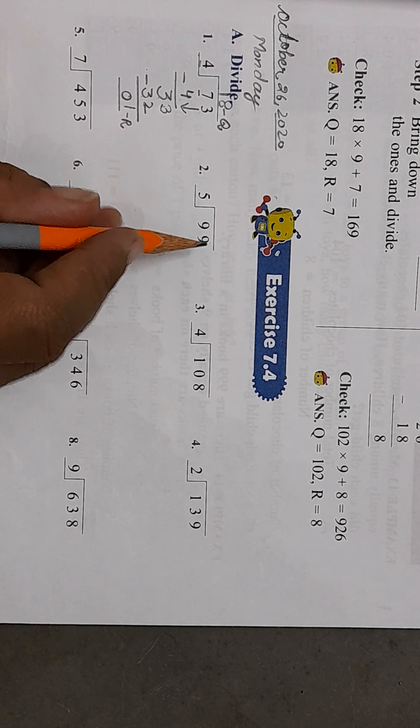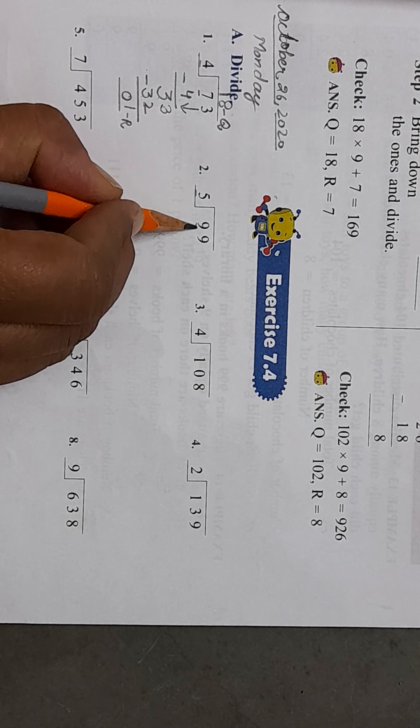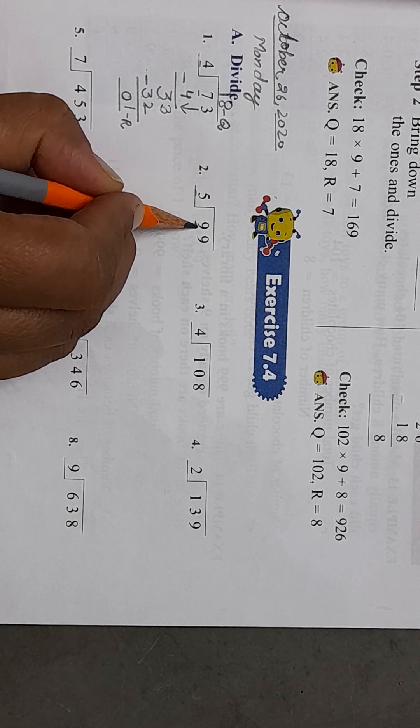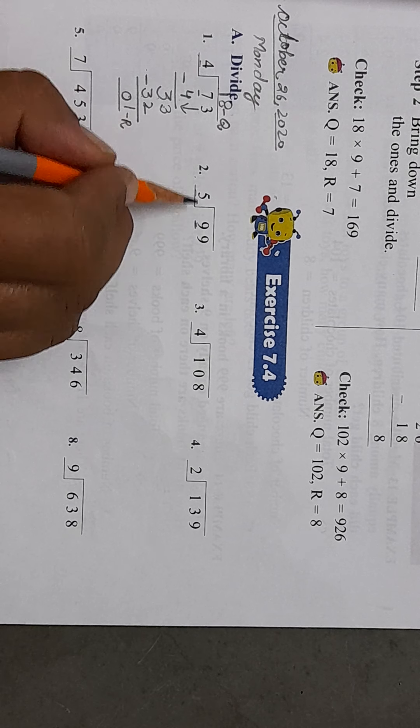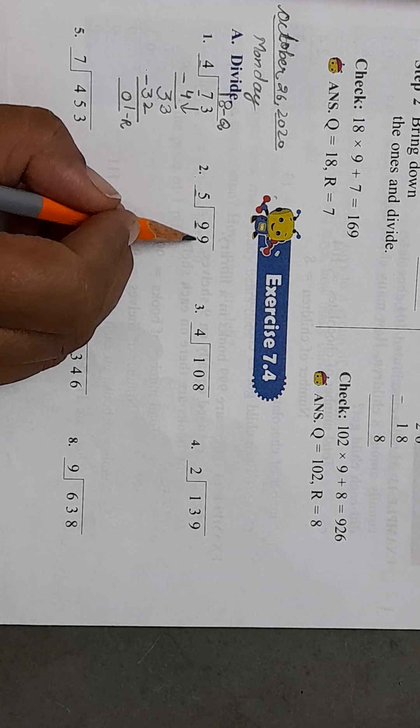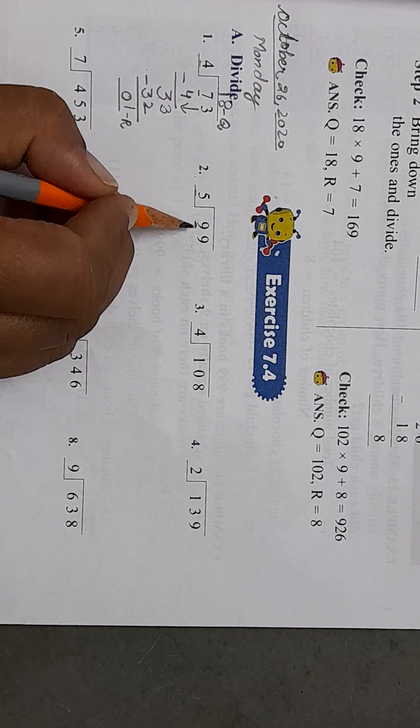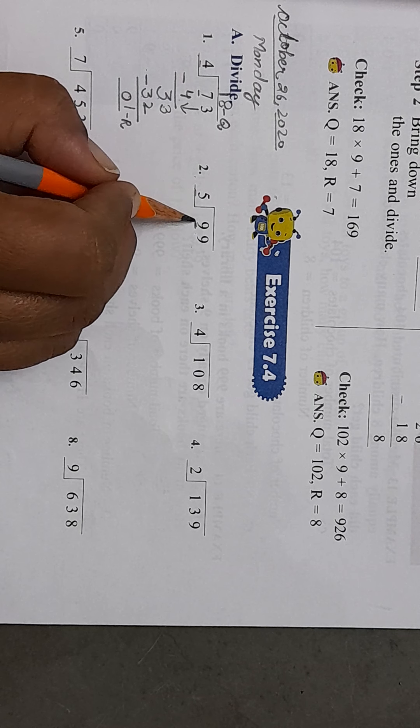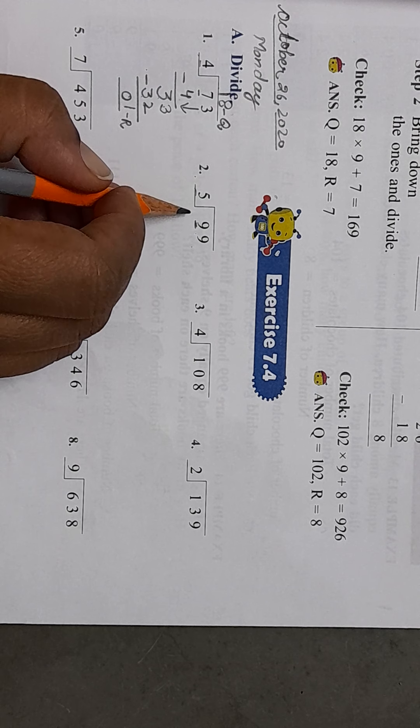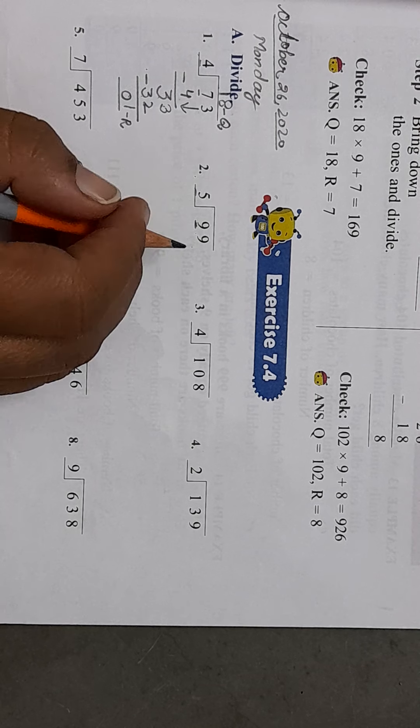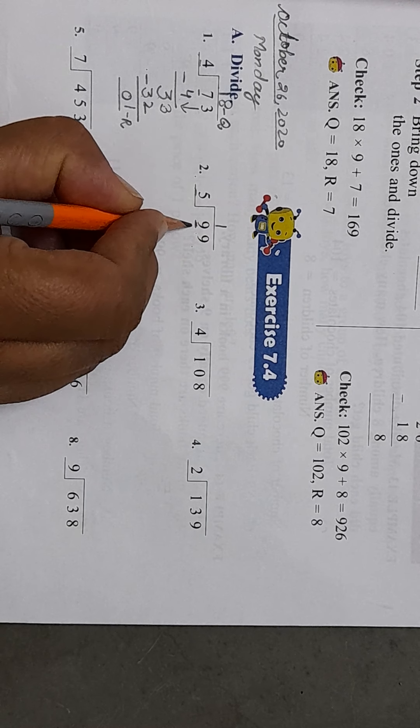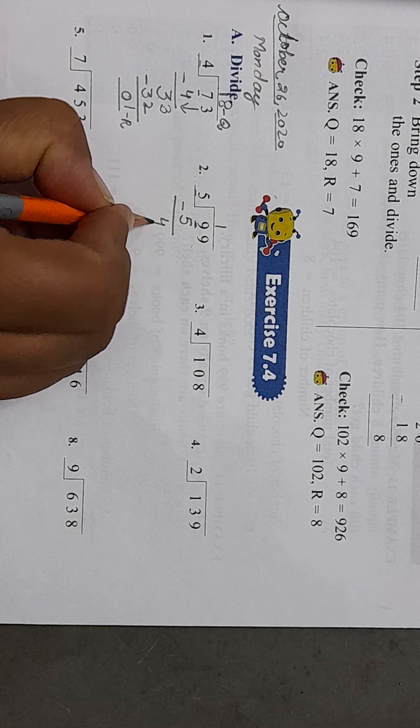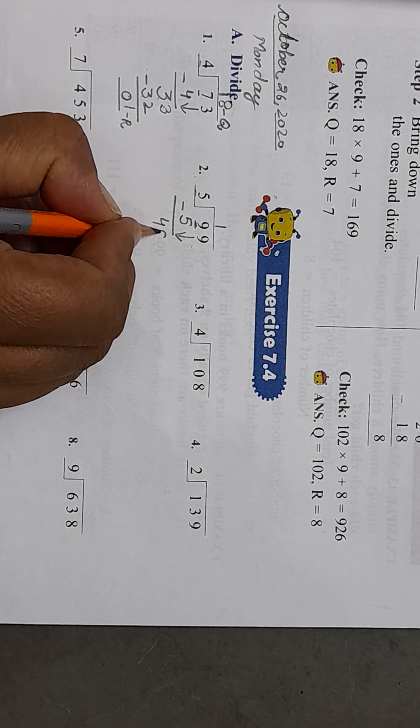Now number 2. So 5. First we compare with the first number. Is 9 greater than 5? Yes, 9 is greater than 5, so there is no need to take the second number. 9 doesn't come in the table of 5, so we need to see which number is smaller than 9 and comes in 5's table. 5 ones are 5. So 9 minus 5 is 4.